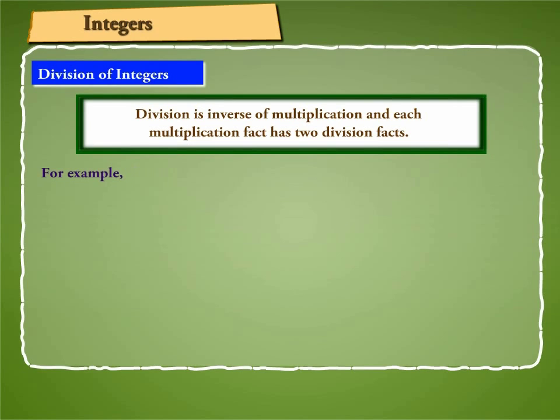For example, 3 × 6 = 18 gives 18 ÷ 6 = 3 and 18 ÷ 3 = 6.